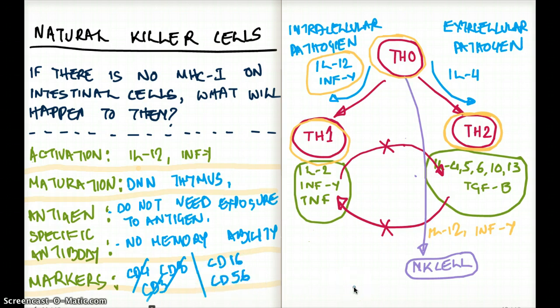So now that's my interpretation of natural killer cells. They're activated by interferon gamma and IL-12. They do not need maturation in the thymus. They have no specificity when it comes to antigen. They don't need exposure to an antigen to mature. They have no memorability. And their markers are CD16 and CD56.